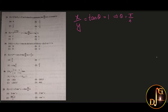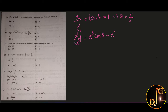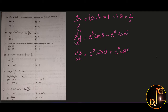This is in the parametric form. So to find dy/dx, we compute dy/dθ divided by dx/dθ. dy/dθ is e^θ cos θ minus e^θ sin θ. Similarly, dx/dθ is e^θ sin θ plus e^θ cos θ. So dy/dx is the ratio of these two expressions.